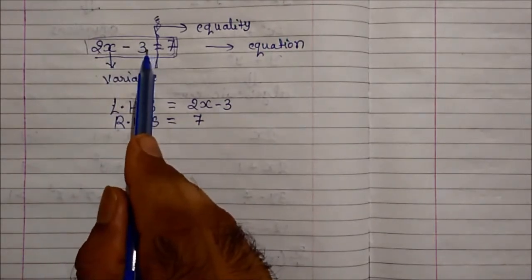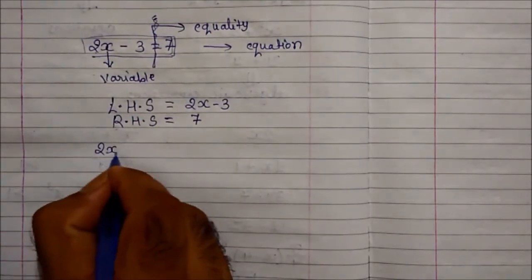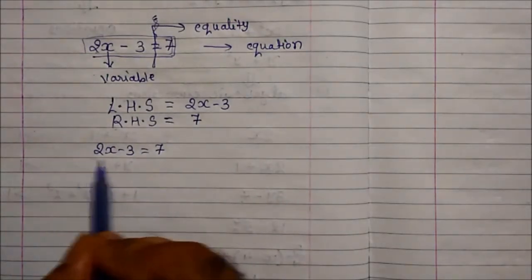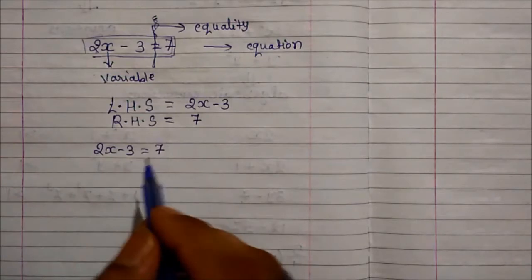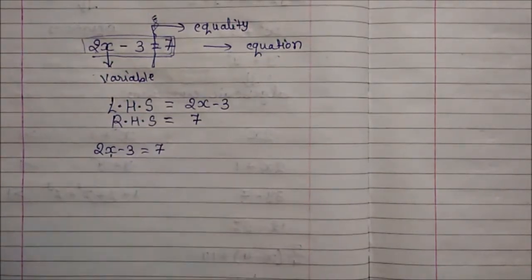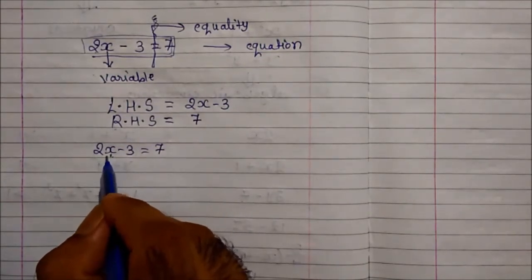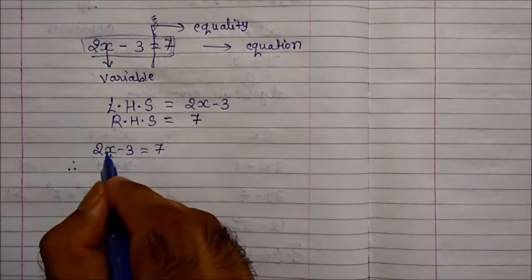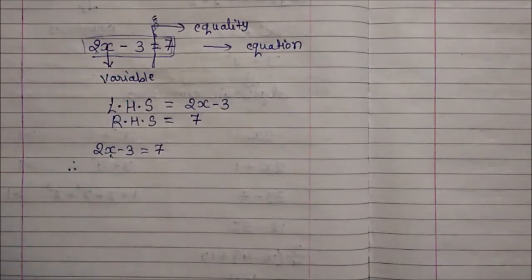Since we have an equation, so let's try to solve this equation. 2x-3 is equal to 7. Now what is the meaning of solving an equation? Solving an equation is nothing but to find out the value of the variable. Here the variable is x, therefore we will find the value of x. Whatever numbers are there with x, we will try to remove them, but as per the rules of mathematics only.